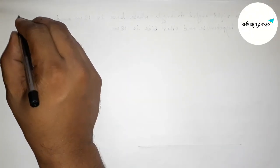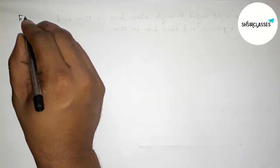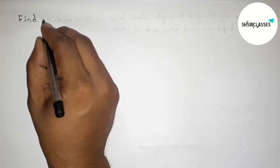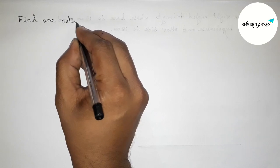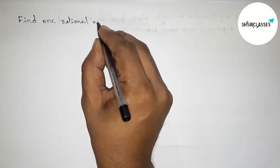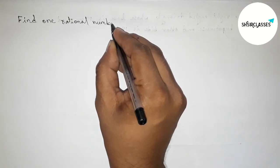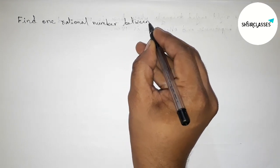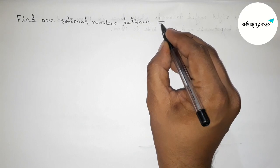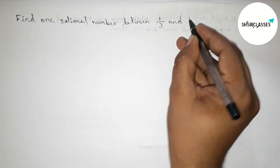Hi everyone, welcome to SI Share Classes. Today in this video we have to find one rational number between 1/3 and 2/7 in an easy way, so please watch the video till the end. So let's start the video.